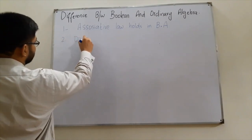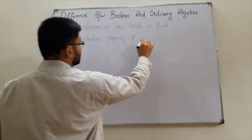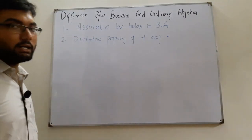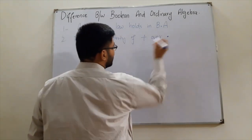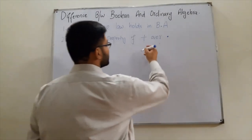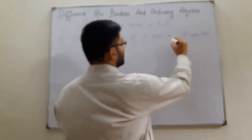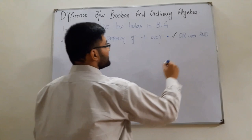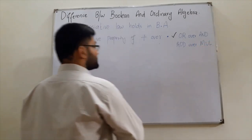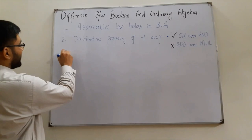The second point is that the distributive property of the OR operation over the AND operation is valid in boolean algebra. But in ordinary algebra, addition over multiplication is not valid — same case here: OR over AND is valid in boolean algebra but not in ordinary algebra.